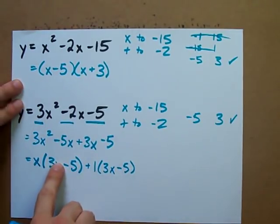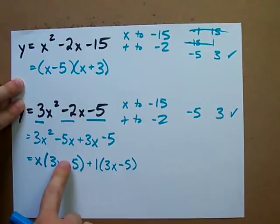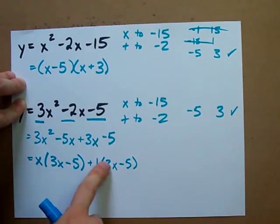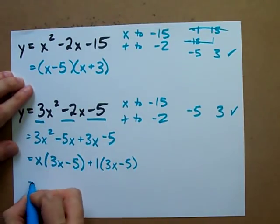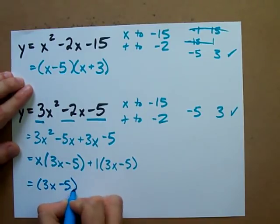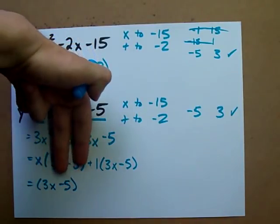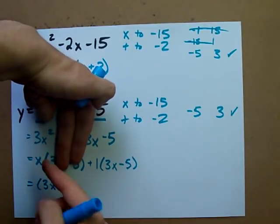Now, we have 3x minus 5 in both of these terms. So we can pull that out. And what are we left with? Well, when we pull 3x minus 5 out of this, we're left with x.